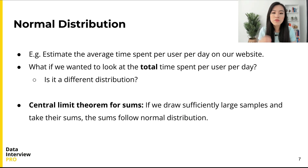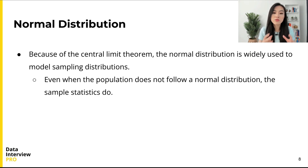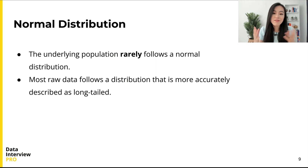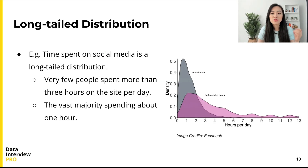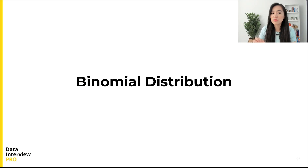As it turns out, this also follows a normal distribution, because the central limit theorem for sums tells us that if we keep drawing sufficiently large samples and take their sums, the sums also follow a normal distribution. Because of the central limit theorem, the normal distribution is widely used to model sampling distributions — even when the underlying population does not follow a normal distribution, the sample statistics do. That said, most raw data in reality follows a distribution more accurately described as long-tailed, with a long tail on either the left or right side. For example, the distribution of time spent on social media is long-tailed: according to research from Facebook, very few people spend more than three hours on the site per day, with the vast majority spending about one hour.